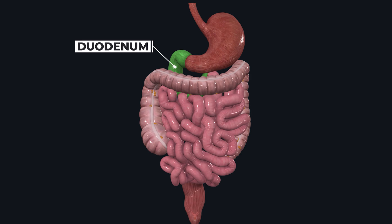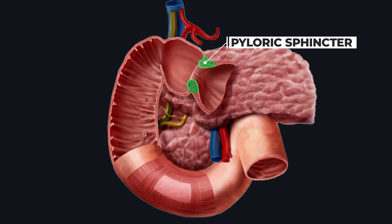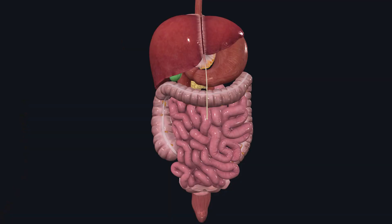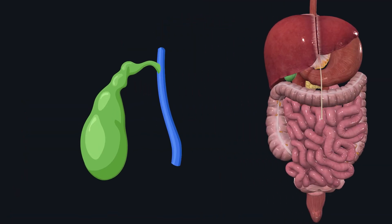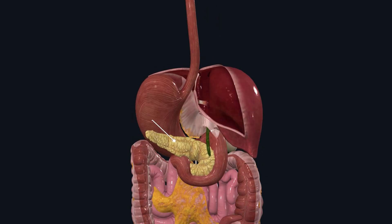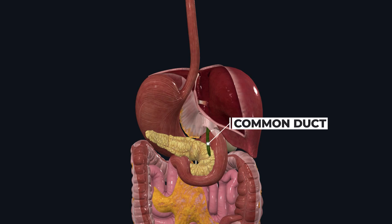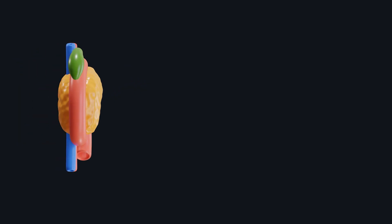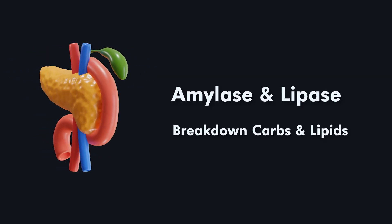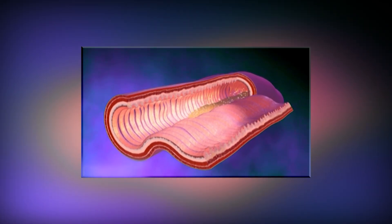The small intestine is divided into three parts. The first is the duodenum, which starts from the pyloric sphincter and is about 25 to 30 centimeters long. Here, digestive secretions from the liver and pancreas enter through a duct. The liver produces bile, which is stored in the gallbladder and released into the duodenum to help break down fats. The pancreas, located behind the stomach, produces digestive enzymes including amylase, which breaks down carbohydrates, and lipase, which breaks down fats. At this stage, the food becomes more watery in appearance.